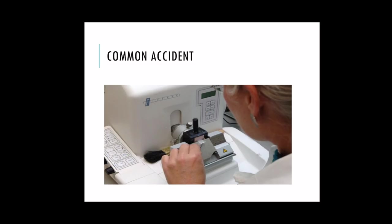One of the most common accidents in the laboratory involves cutting of one's finger or hand on microtome knives. A microtome is used to cut tissues into thin sections, around 4 to 6 micra. Imagine how sharp-edged these blades are — you have to always be very careful in the histopath lab, especially when using the microtome.